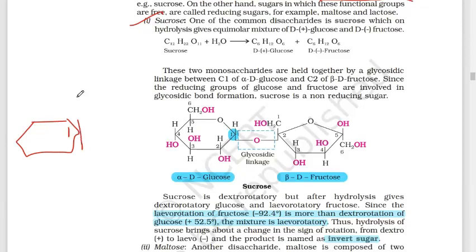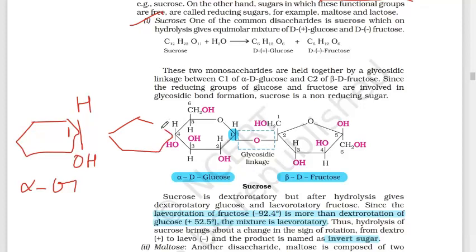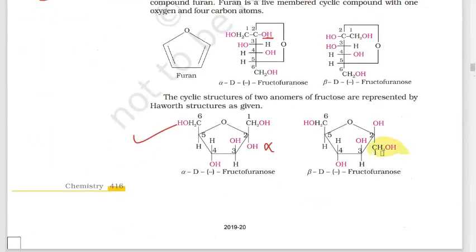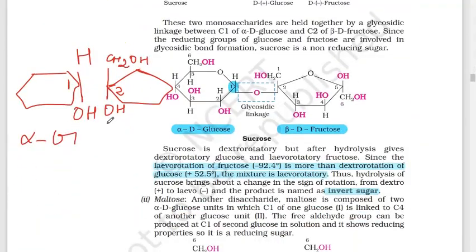Specifically, sucrose is formed from alpha-D-glucose and beta-D-fructose. You can see the alpha-D-glucose structure with carbon number one. For fructose, the ketone group is present at carbon number two, and it has a CH2OH group. This is the alpha-glucose and beta-fructose combination.